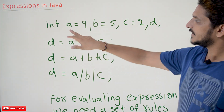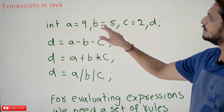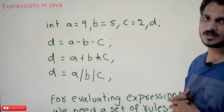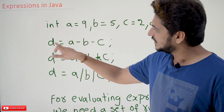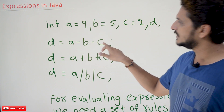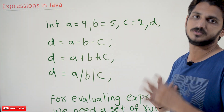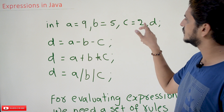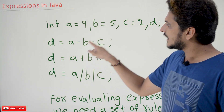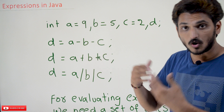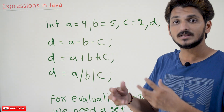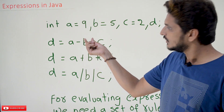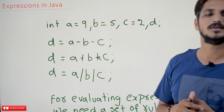Coming to today's class — expressions in Java. Let's take an example and understand. int a = 9, b = 5, c = 2, and d — these are the four variables we have considered. If you write an expression like d = a - b - c, it's called an expression. Here a = 9, b = 5, c = 2, so this becomes 9 - 5 - 2.